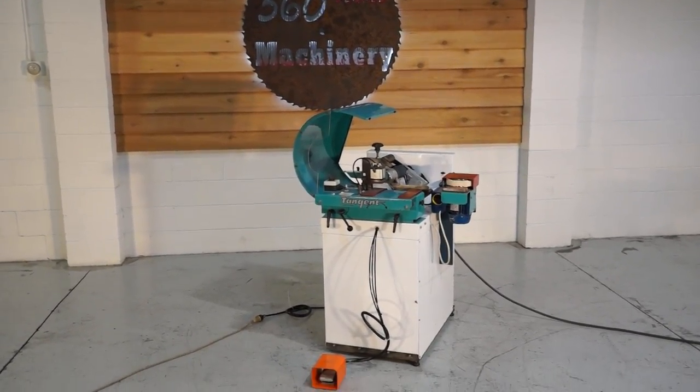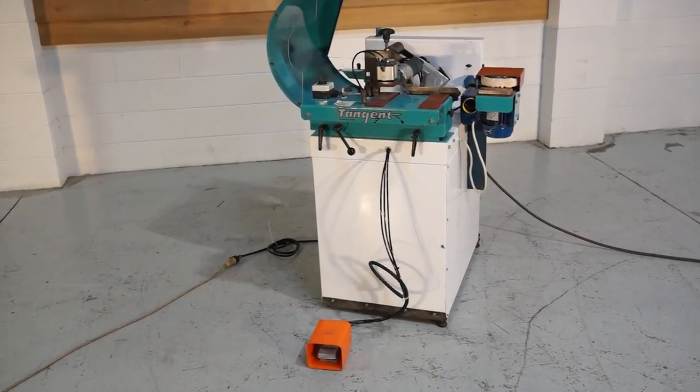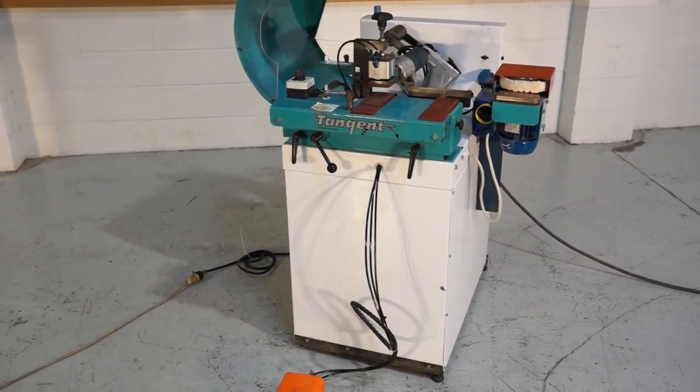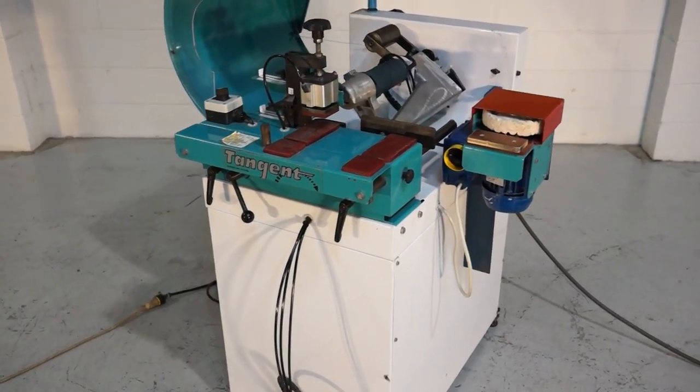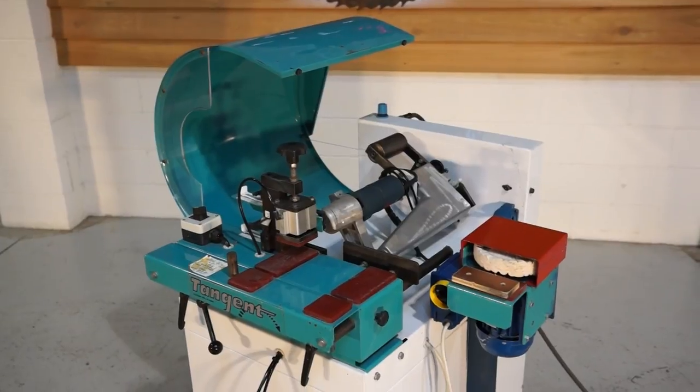Welcome to 360 degree machinery. We're going to do a walkthrough of a Holzer tangent corner rounding unit. Basically it's a standalone unit that complements an edge bander that does not have corner rounding. It's a really nice option if you do not have corner rounding.